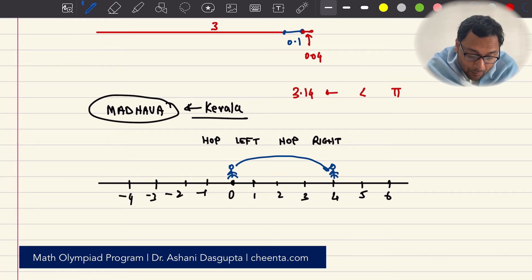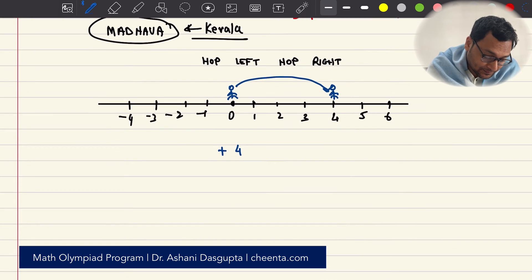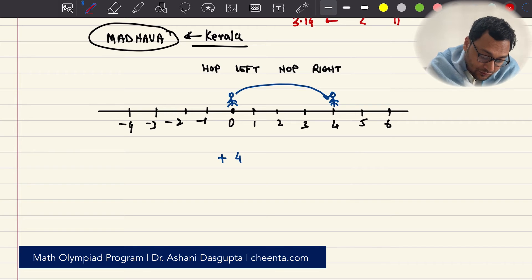Then, you hop to the left. So, plus 4, hop to the left, 4 thirds. 4 thirds means it's approximately 1.33. So, you hop to the left, 4 thirds. So, basically, you go back, 1 and a third unit. So, now you're here somewhere. So, minus 4 thirds.